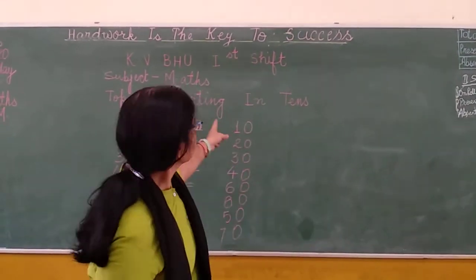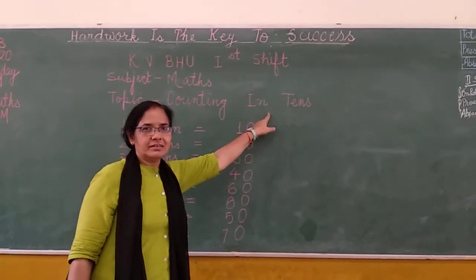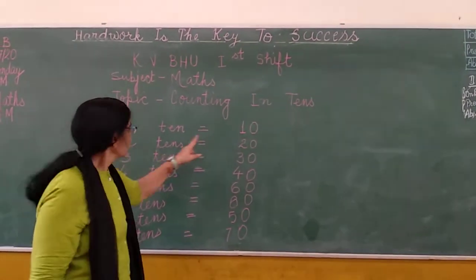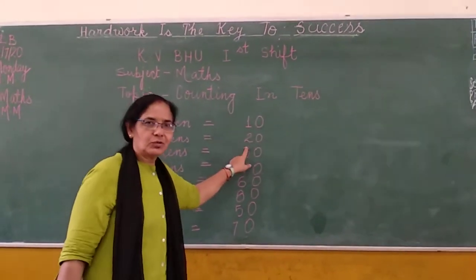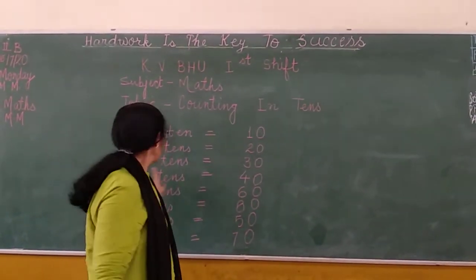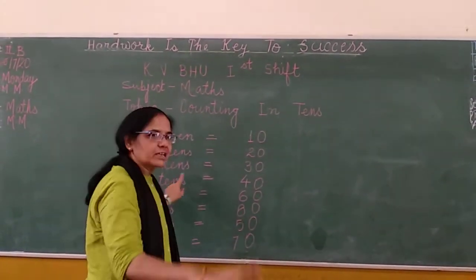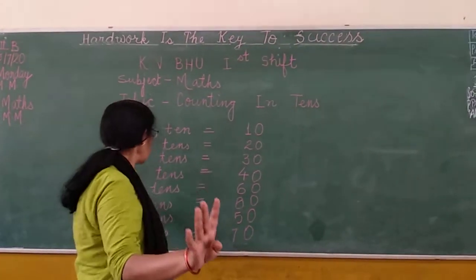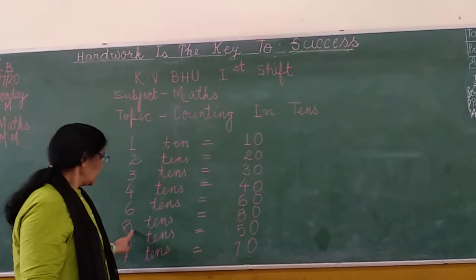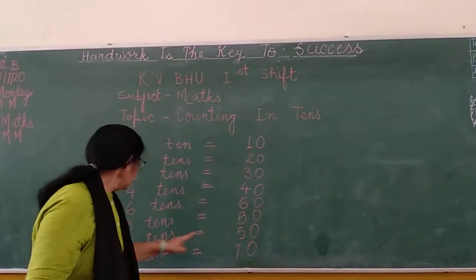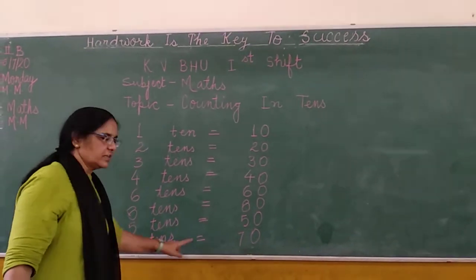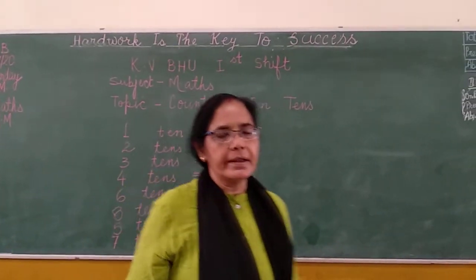In the corner of number 7, counting in 10, you will see: 1 ten equals 10, 2 tens equals 20, 3 tens equals 30, 4 tens equals 40, 5 tens equals 50, 7 tens equals 70, 8 tens equals 80.